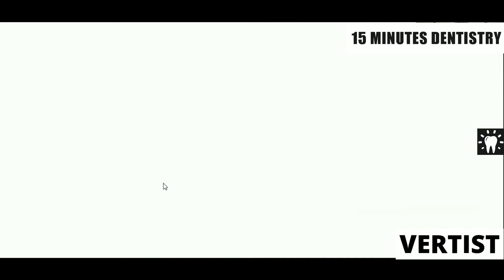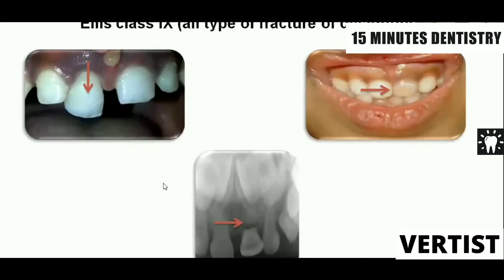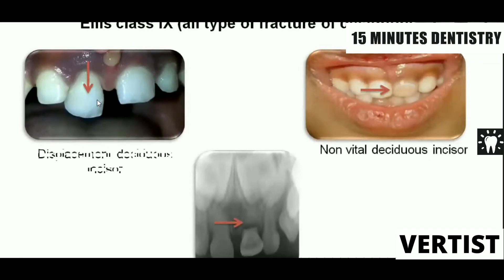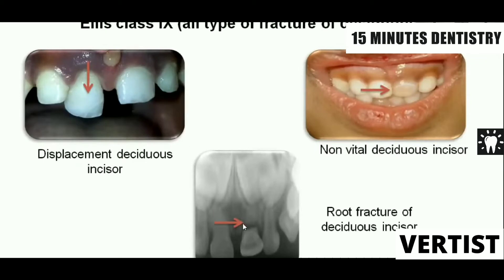LS class 9 is any type of fracture of a deciduous tooth — be it a luxation injury, a non-vital tooth due to trauma, or a root fracture. Any type of fracture of a deciduous tooth is categorized as LS class 9. Whether it involves enamel, dentine, pulp exposure, luxation injury, or the tooth has become non-vital, it always stays LS class 9. Total 9 classes: 1 to 8 for permanent teeth, and 9 entirely for deciduous teeth.